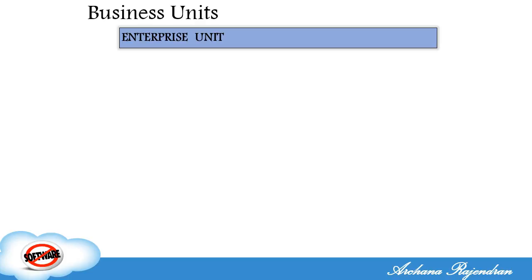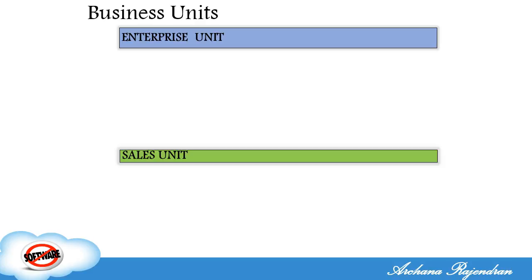Next is a sales unit. Definitely they need some unit which sells the product — the mobile phones that have been manufactured by the enterprise unit. That is the whole objective of the sales unit.